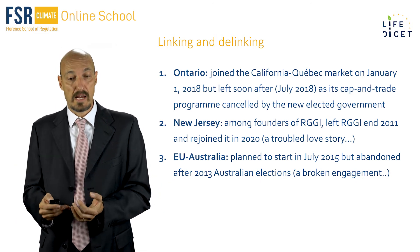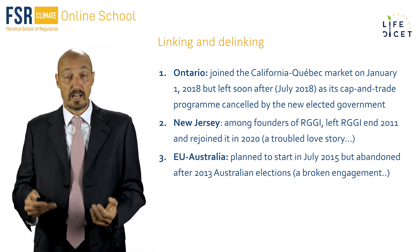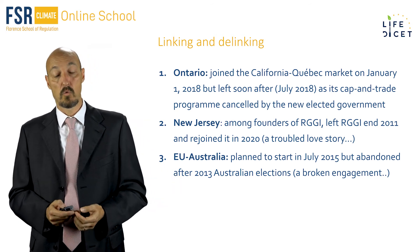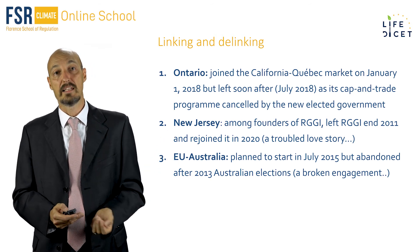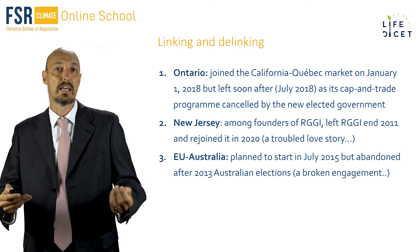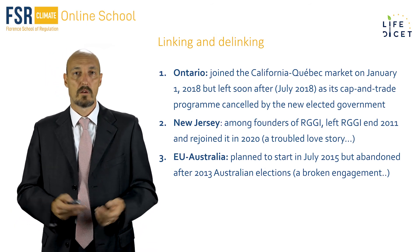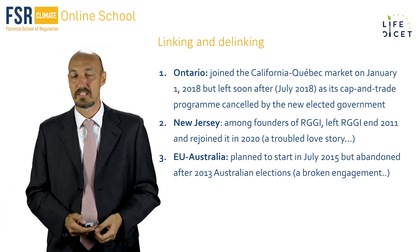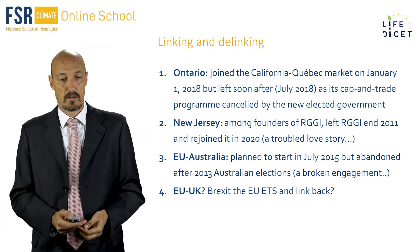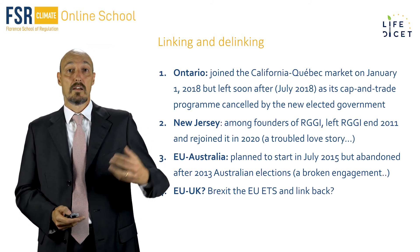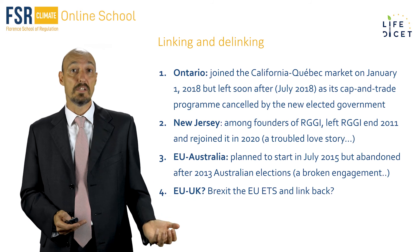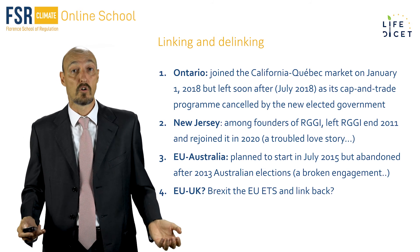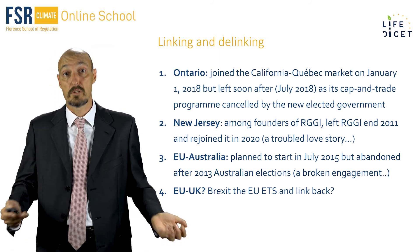Europe and Australia had decided to start a linkage in July 2015, but abandoned the project after the 2013 Australian elections, when the new government decided to repeal its own system. A sort of broken engagement, since EU and Australia were not yet linked. And finally, Brexit might cause the UK to exit the EU ETS, and possibly link back at a later stage. But negotiations are still ongoing, and all scenarios are still possible, so it's too early to say.